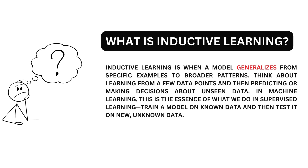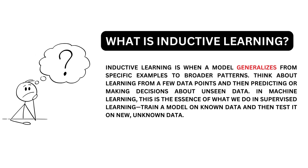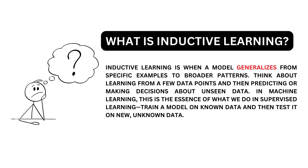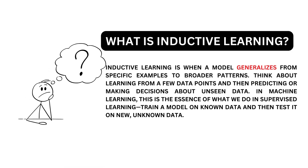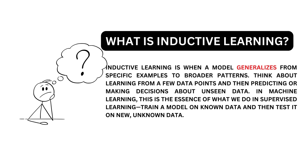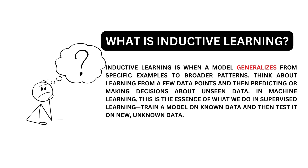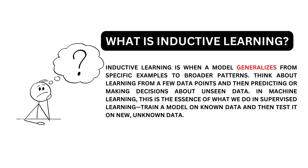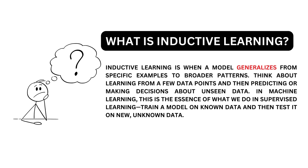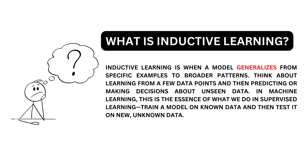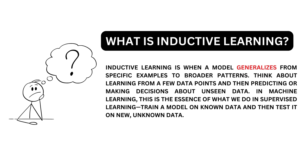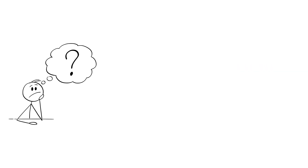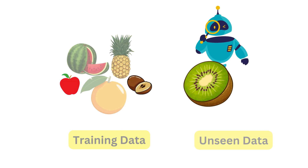First, let's quickly talk about what inductive learning actually means. In simple terms, inductive learning is a process where a machine learning model learns patterns and structures from a set of examples. The key idea here is generalization — the model learns to predict or make decisions about new or unseen data based on the patterns it learned from the training data.